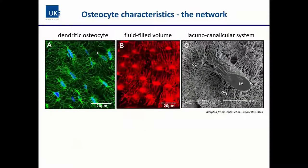The most astonishing characteristic of an osteocyte is really the network. You are not just looking at an individual cell — you have to consider this is a functional network. These three images illustrate first the dendritic connectivity visible through actin labeling, showing dense dendrites connecting murine osteocytes inside the long bone. In the middle image, a fluorescent dye injected into a mouse model via the tail vein reached the osteocyte network of the long bones within minutes.